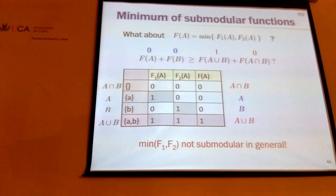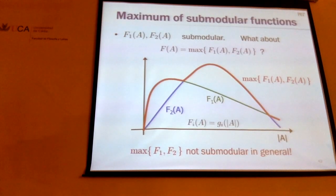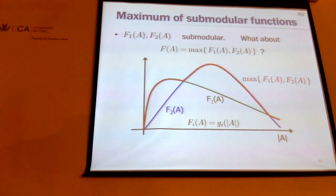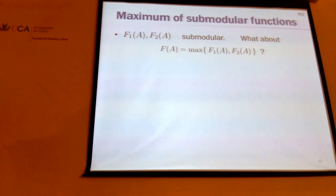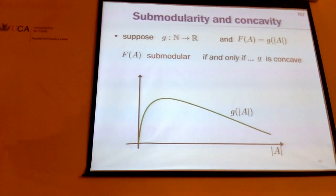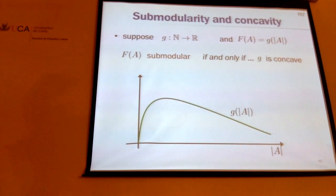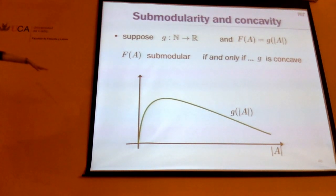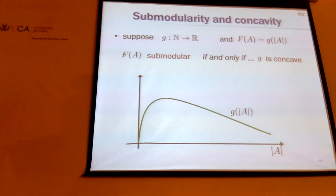There's a question about the example with g of the cardinality: is there an easy example showing that not all submodular functions can be written as g(|A|)? Indeed, many of the functions shown are not of this form. One argument: all functions writable as g(|A|) can be written as a graph cut function and vice versa, but there exist submodular functions that cannot be written as a graph cut function. The counterexample is a function on four items where you have to specify all values — it's not very intuitive, but it proves the point.